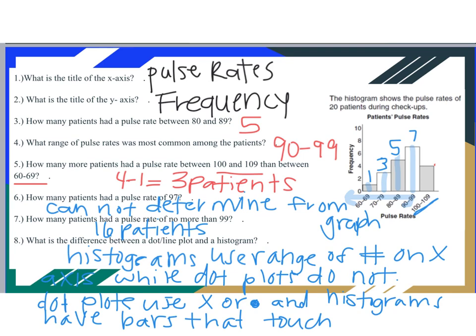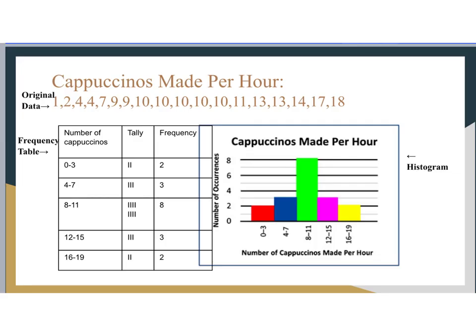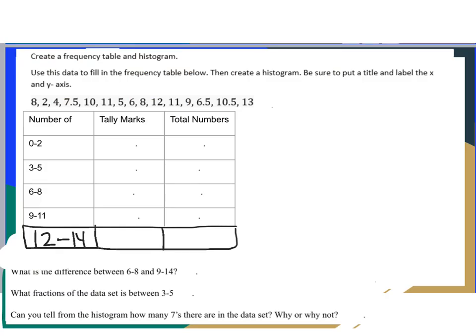Let's talk about what you need in order to make a histogram. You need your original data — here it's cappuccinos made per hour. You need a frequency table, which includes the ranges, tally marks, and frequency. The tally marks and frequency are the same thing — just written as tallies versus a number. Then you have your histogram. The ranges on your frequency table match the values on the x-axis.